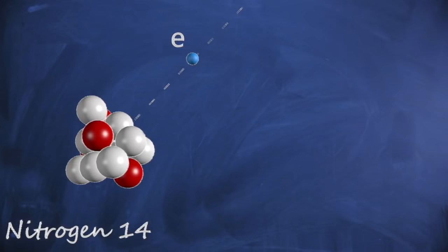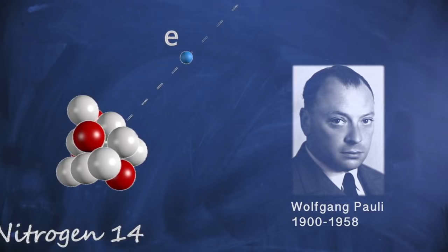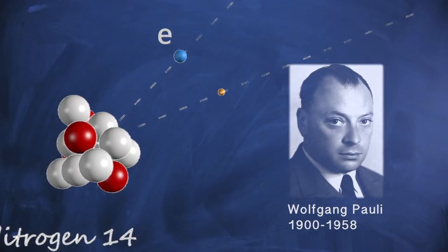Wolfgang Pauli, writing in 1930, felt obliged to invent a particle without mass or electric charge that could participate along with the nuclei and electron in the decay.